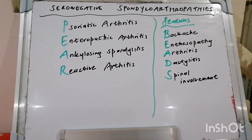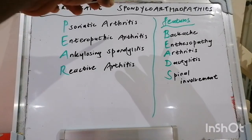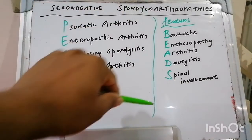Good morning everybody. It's Ryan here again with our 92nd mnemonic in internal medicine and our second in rheumatology. Today our topic is seronegative spondyloarthropathies. The mnemonic is PEAR, and the clinical features of the SPAs is BEADS.